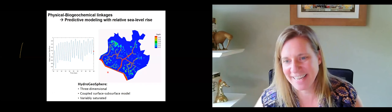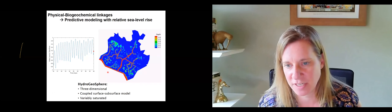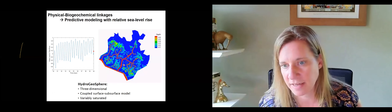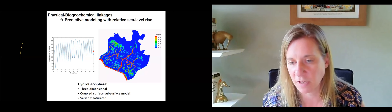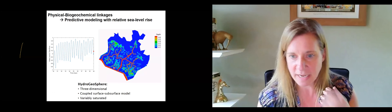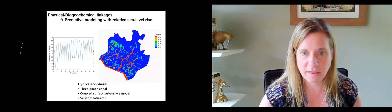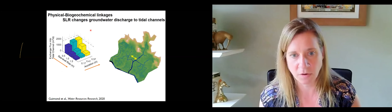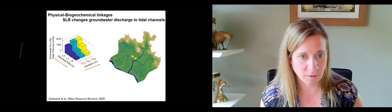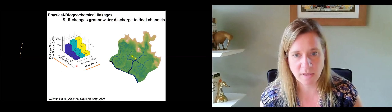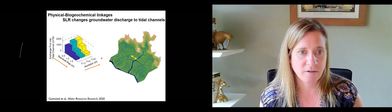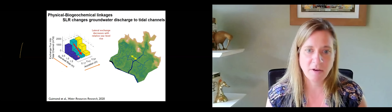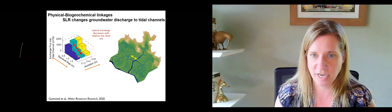The model simulates how the tide changes water depth in the marsh — the tidal channels with water going up and down, and during very high tides much of the marsh tends to flood. With this model, we can calculate groundwater discharge to tidal channels. Julia looked at several scenarios of sea level rise as well as sediment accretion across the marsh, and showed that as relative sea level rises, the amount of discharge into the tidal channels tends to decrease.